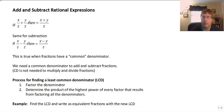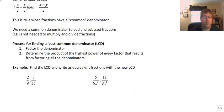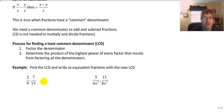The first thing we want to do is look at the process for finding the lowest common denominator. First, factor the denominator. Then determine the product — multiplication — of the highest power of every factor that results from factoring all the denominators. I usually work on a 'what do we need' basis: what does this denominator need, what does that denominator need? Once things are factored, ask yourself what do I need to make one denominator exactly like the other.